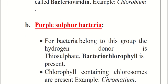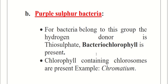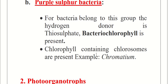In purple sulfur bacteria, the hydrogen donor is thiosulfate. Bacteriochlorophyll is present, and chlorophyll-containing chlorosomes are also present. An example is Chromatium.